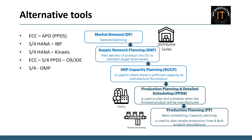The integration of S/4 HANA with IBP mirrors the ECC integration with APO. SAP IBP, unlike APO, doesn't generate plan orders directly. Instead, it furnishes product code, quantity, and date details to create plan orders in S/4. Reading and interpreting these details is crucial for generating plan orders. Some clients opt solely for demand planning from IBP, employing third-party tools for SNP.